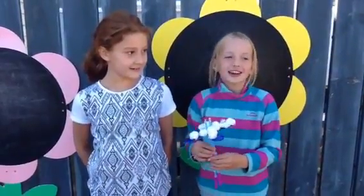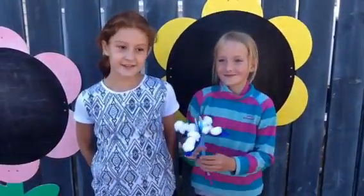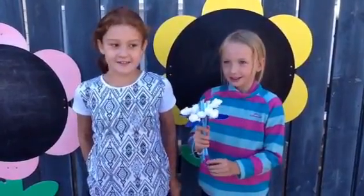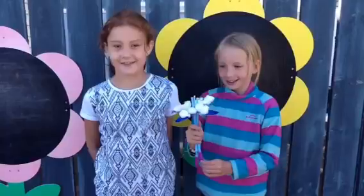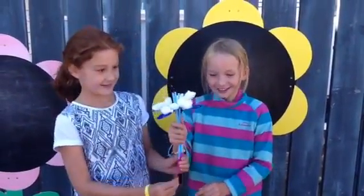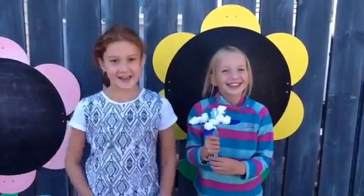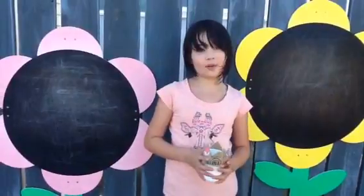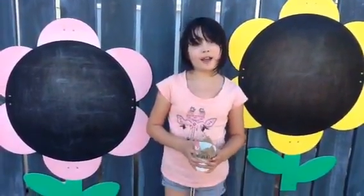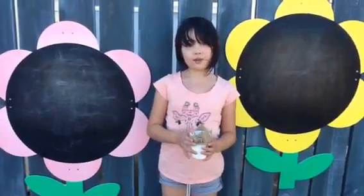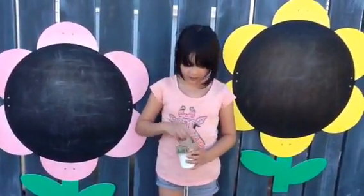We called our seed the flower blaster. We called it the flower blaster because it looks like a flower and it shoots out seeds like a person throwing a dart. This is our seed. This model is an example of dispersal by explosion.